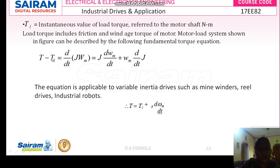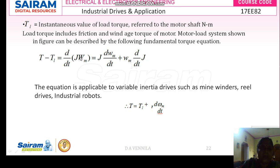For the motor load system, the fundamental torque equation is given by: T minus TL equals J times dω/dt times ωM. Where T is the motor torque, TL is the load torque, J is the moment of inertia, and ωM is the speed of the motor shaft. Here, keeping J constant, differentiate speed with respect to time; then keeping ωM constant, differentiate the moment of inertia of the motor load system with respect to time.